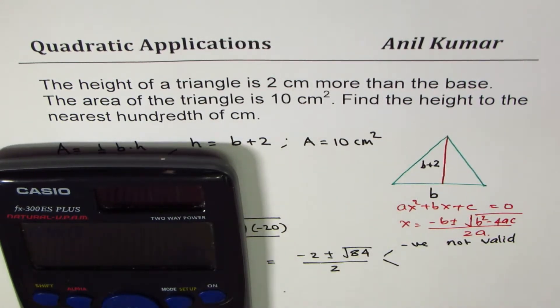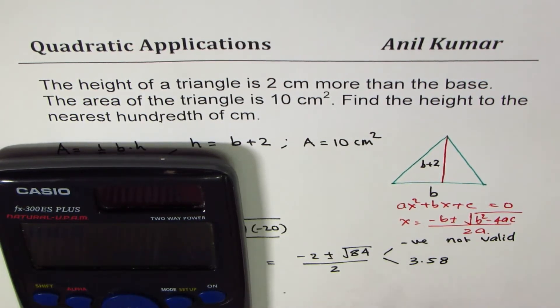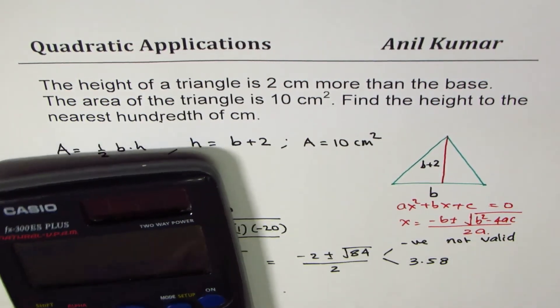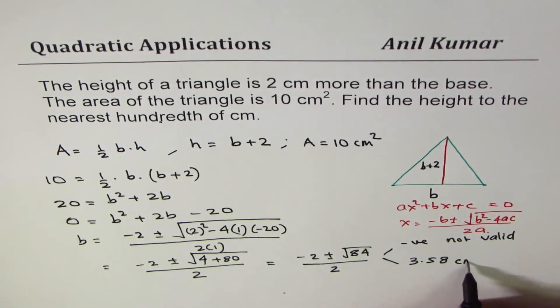So we'll write decimals and round it to hundredth place: it becomes 3.58. So 3.58 and the units will be centimeters. That becomes the base.